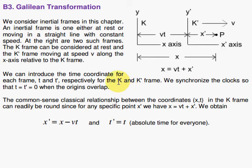A Galilean transformation is your classical transformation between two inertial frames of reference. Now an inertial frame is one that's either at rest or moving in a straight line with constant speed. At the right here we have two such frames.